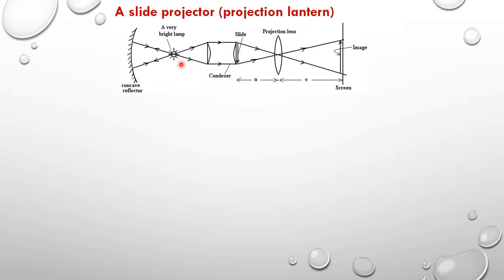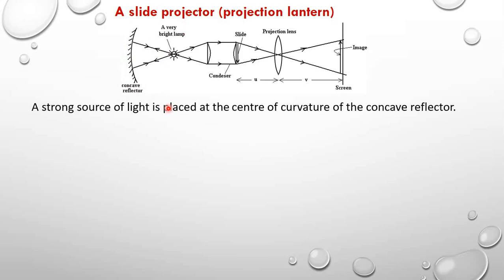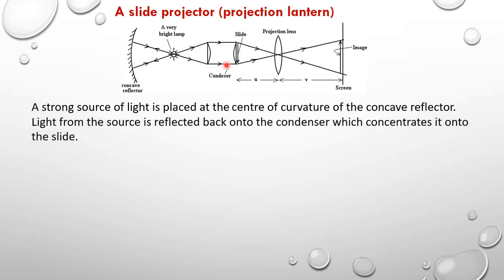A strong source of light is placed at the center of curvature of a concave reflector, and then the light from the source is reflected back onto the condenser, which then concentrates it onto a slide, and then the projection lens forms a magnified real image of the slide onto a screen.